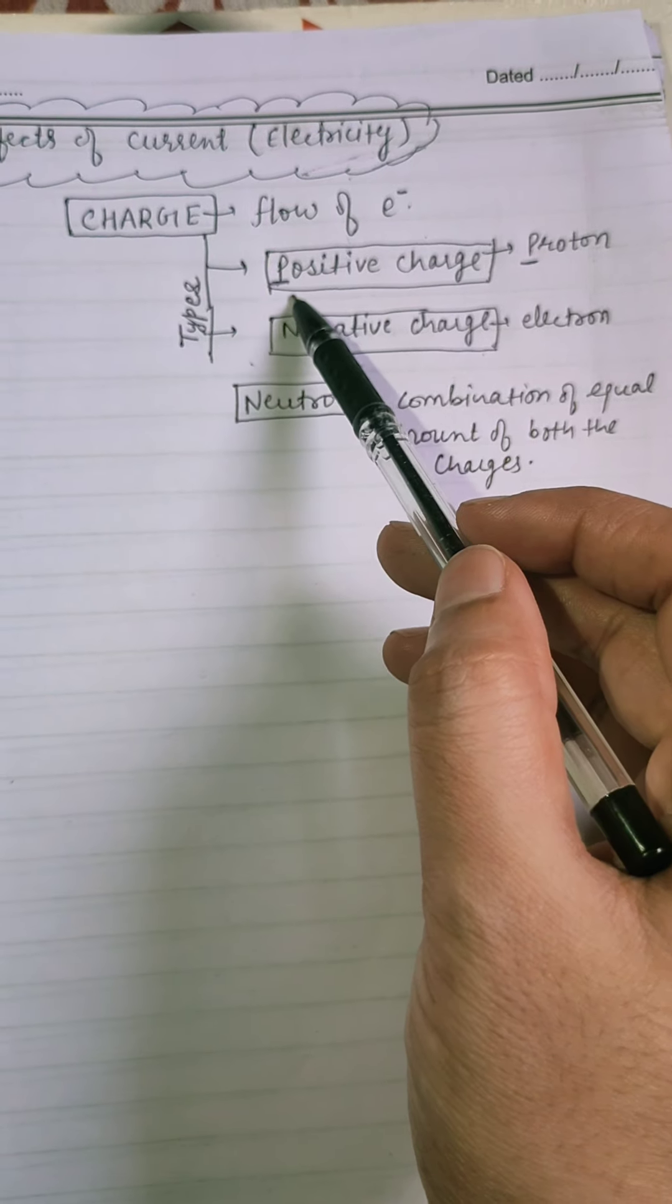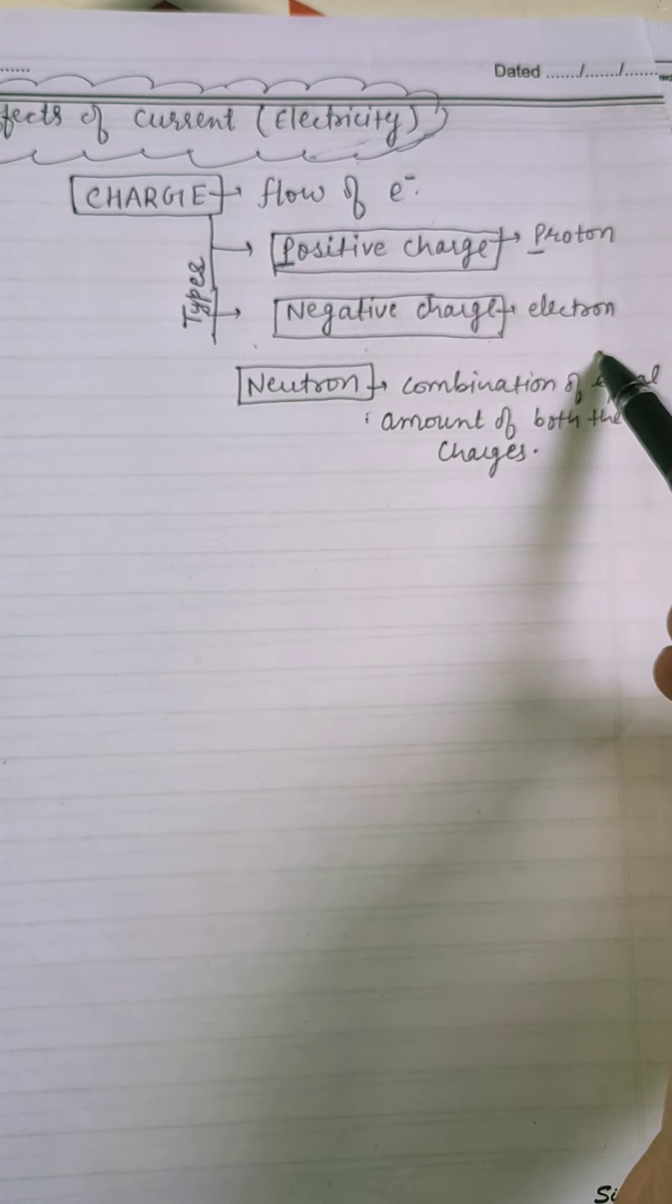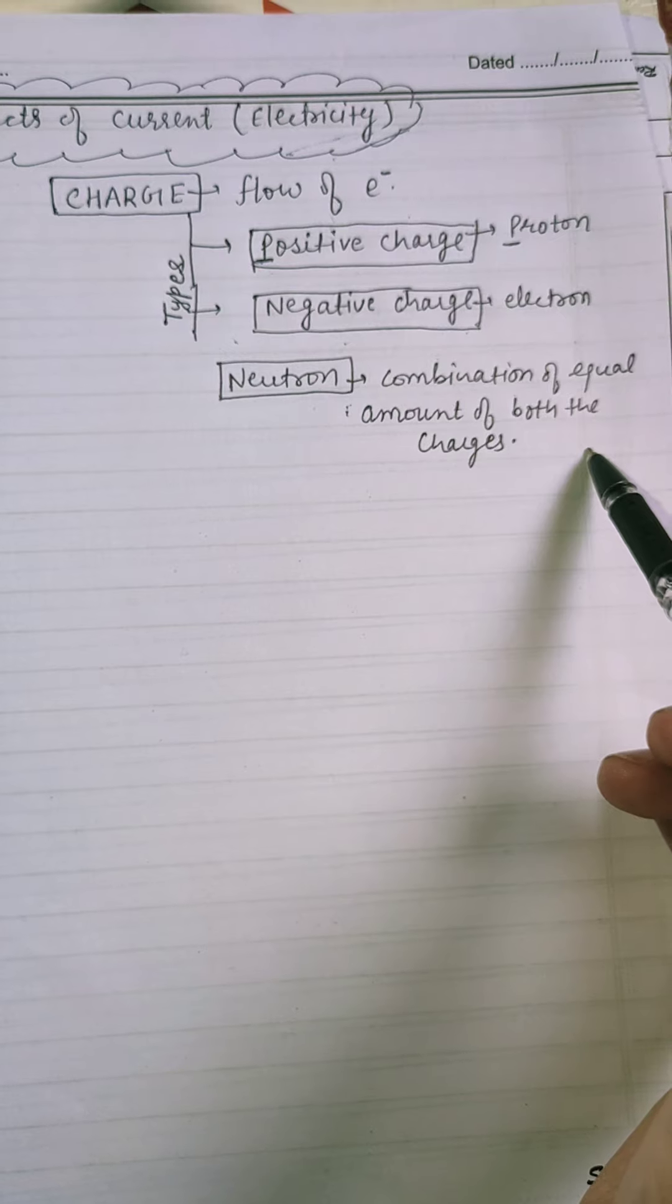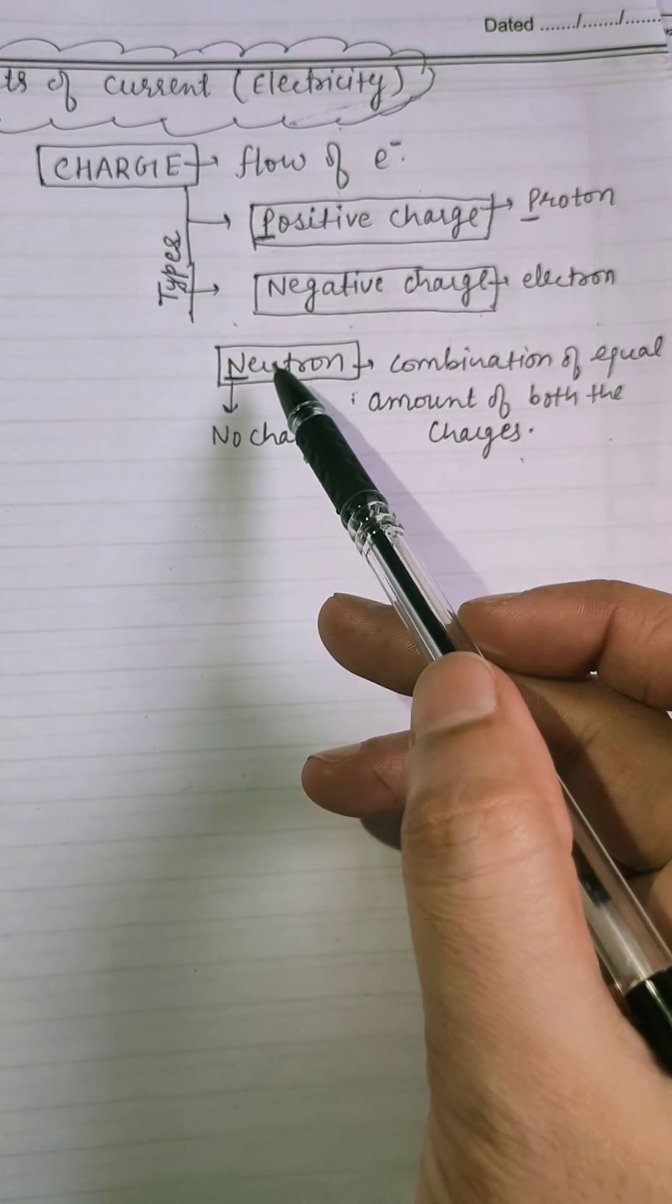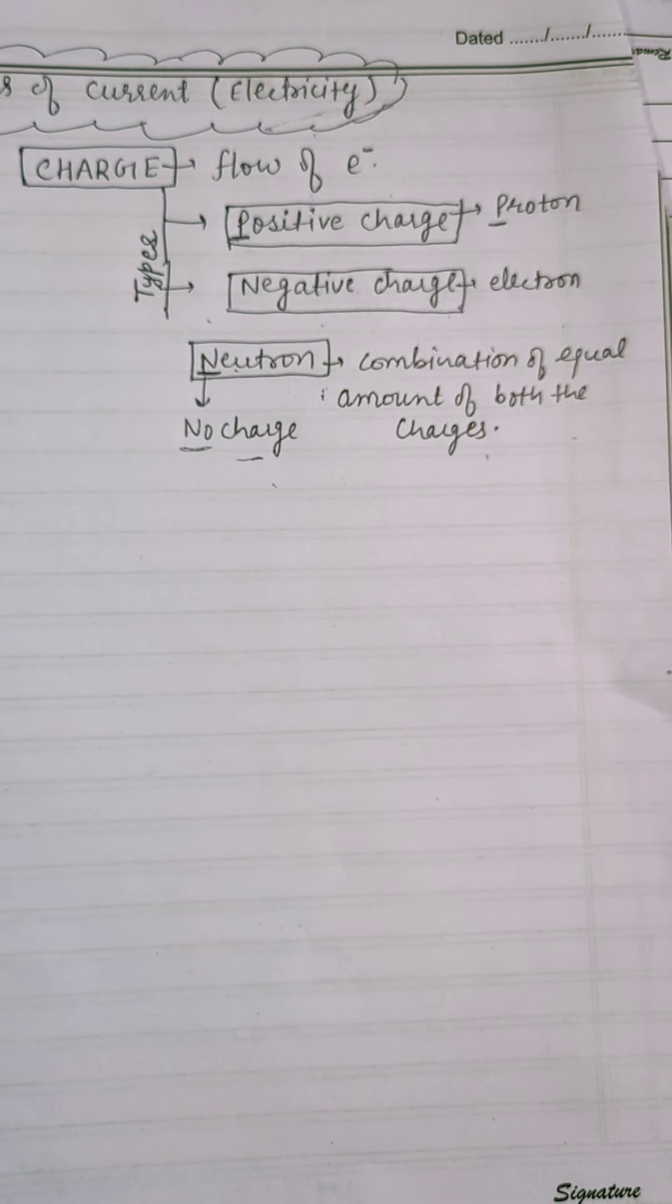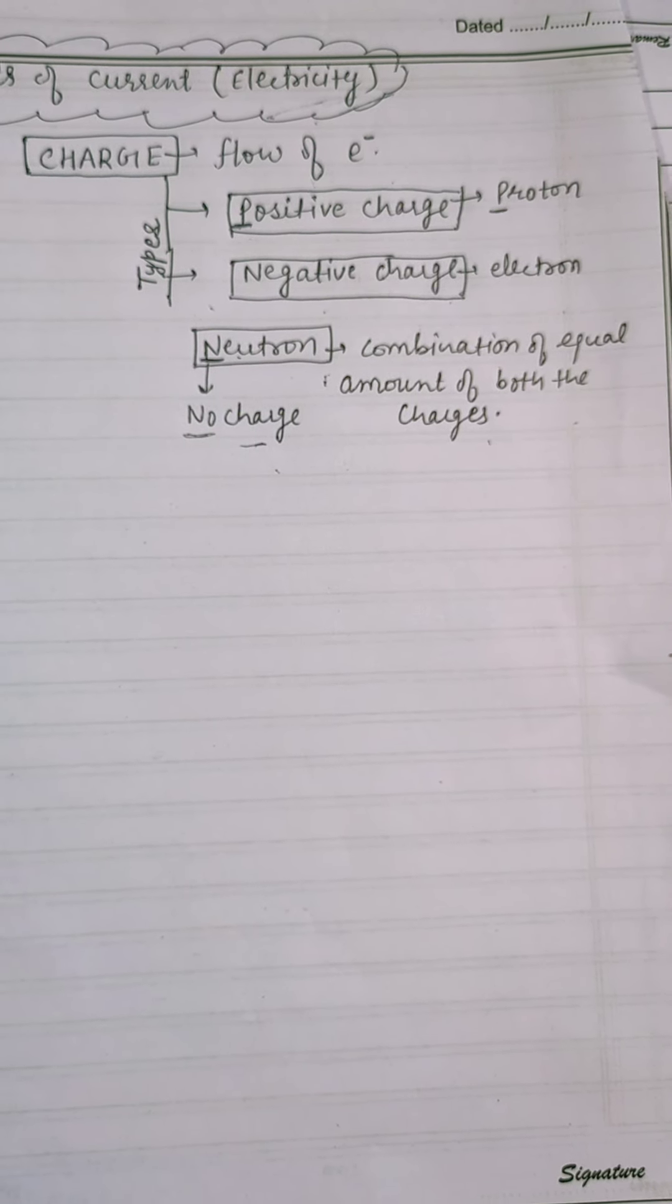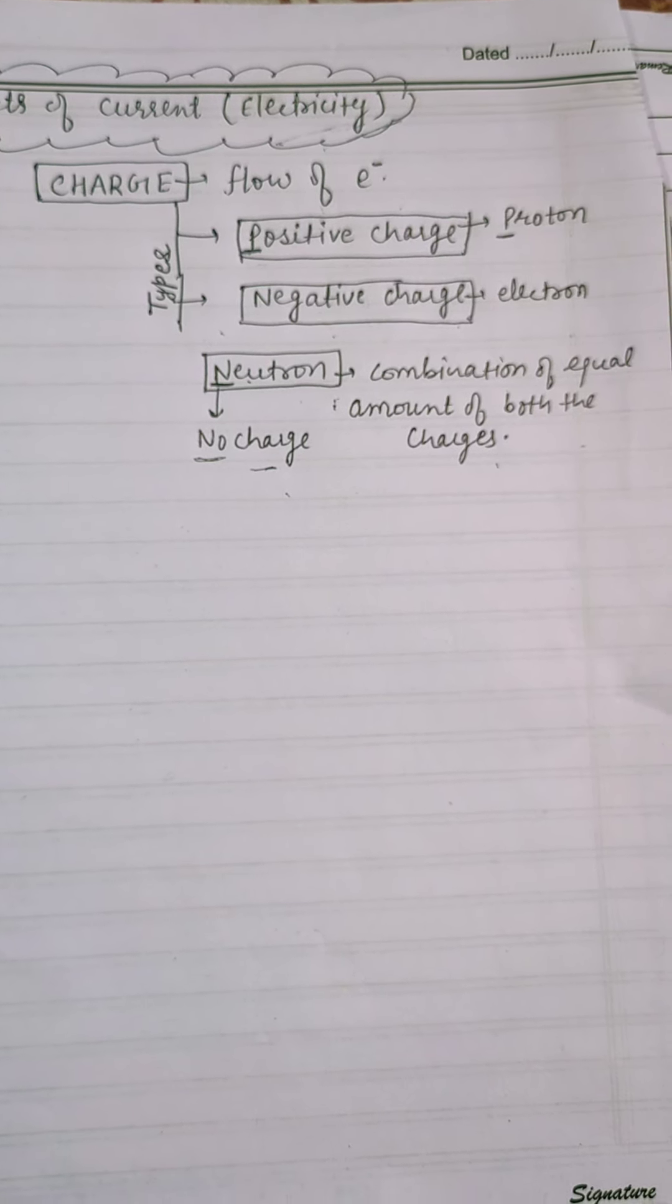Positive charge present on proton and negative charge present on electron. Here, neutron is a combination of equal amount of positive and negative charges. N for neutron and N for no charge. So, there is no charge on neutron. We can say that net charge of neutron is zero. But, positive and negative charge present on neutron.